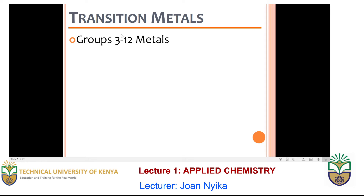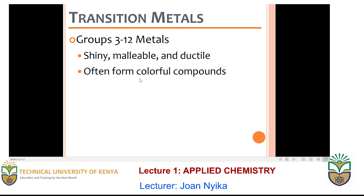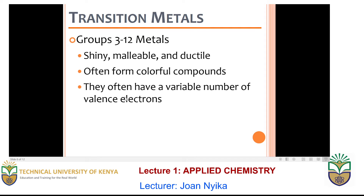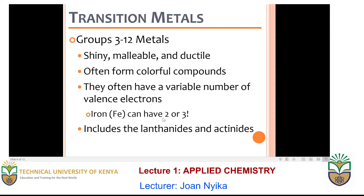From the alkaline earth metals, we go to what we call the transition metals. They are found in groups three to twelve. Just like group one and group two metals, transition metals are shiny, malleable, and ductile. They often form colorful compounds and have a variable number of valence electrons. For instance, iron, which we discussed in previous classes, has a valence of two or three — it can lose either two or three electrons for a chemical reaction to occur.